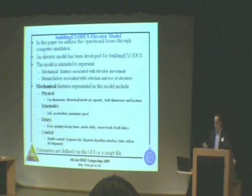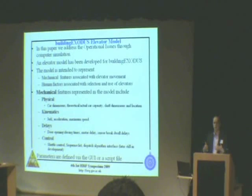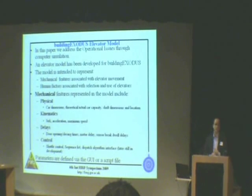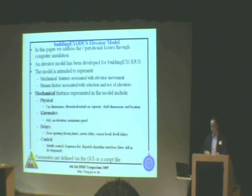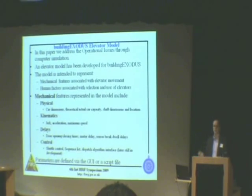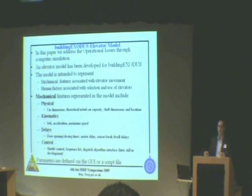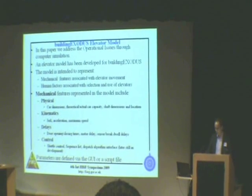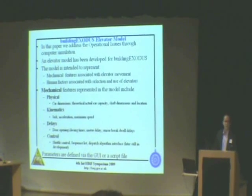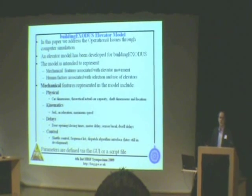In this paper, we're addressing operational issues through computer simulation, and we've developed an elevator model in Building Exodus to help us perform this task. The model can represent various mechanical aspects of the elevator system and some human factors associated with elevator evacuation. With regards to mechanical features, the model can represent the kinematics, the jerk, the acceleration, the maximum speed, and various delay times. There's also a control mechanism which allows users to define how the elevators will move during the simulation and where they will go. These features are configurable via the user interface or via a script file — useful given that the World Trade Center has at least a couple of hundred elevators.